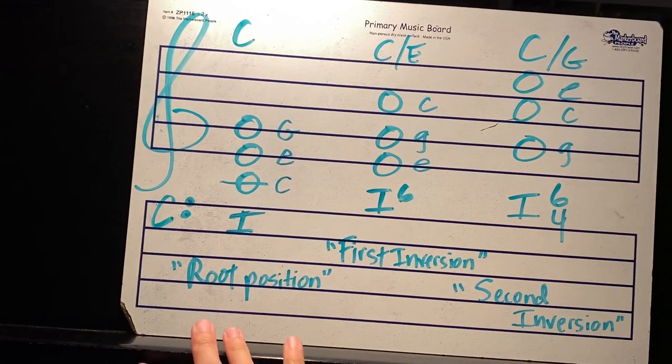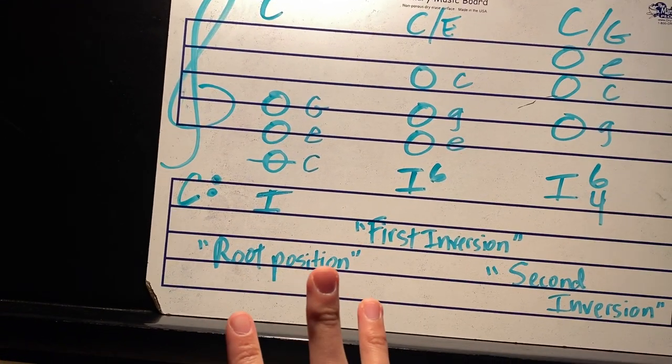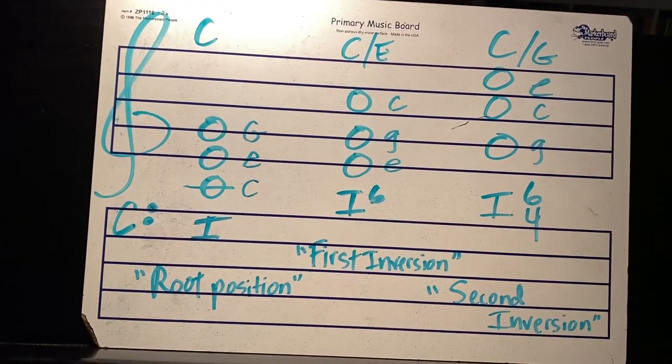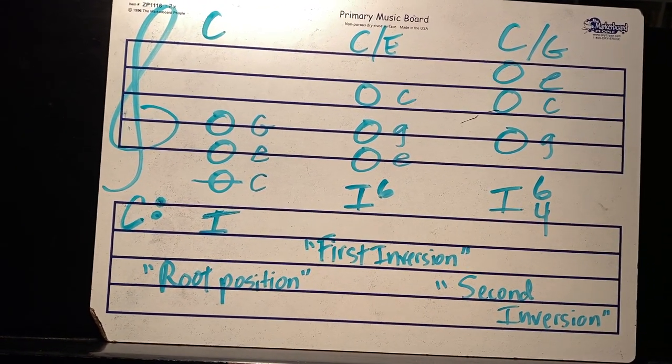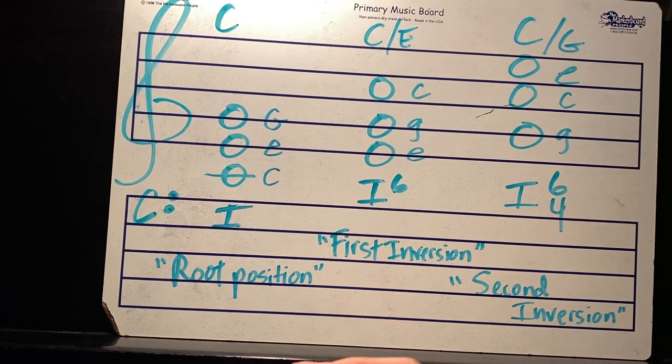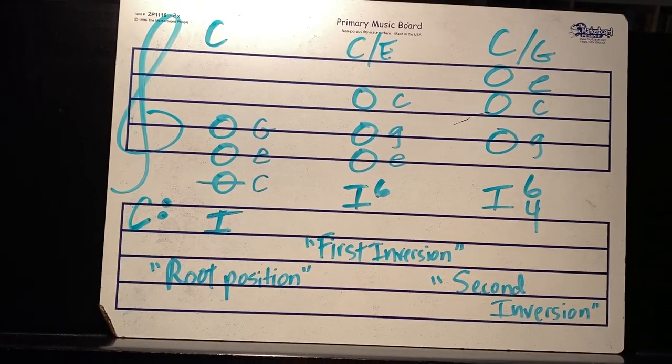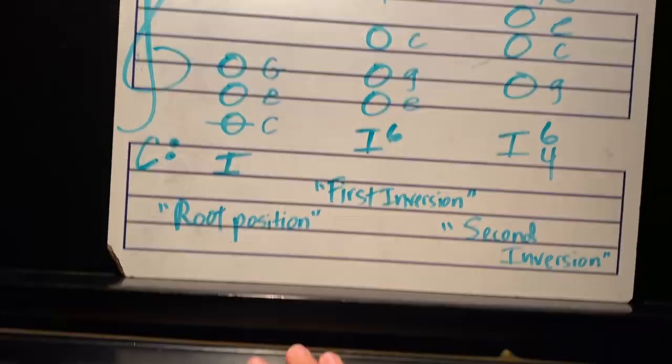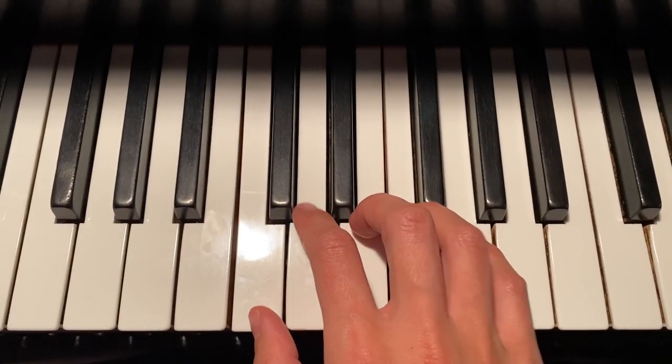You'll notice we need three notes to make a C major chord, and the way we arrange those notes, basically what the bottom note is, is going to dictate which inversion the chord is in. So I need three notes to make a C major chord: C, E, and G.